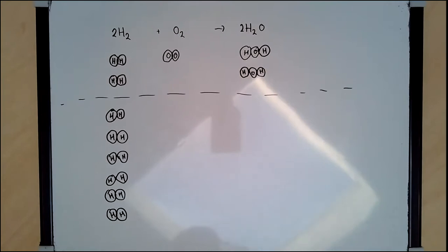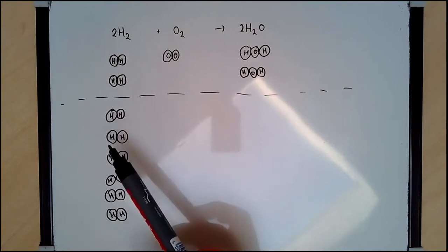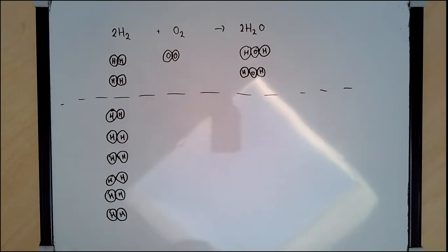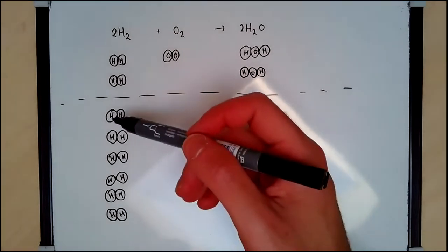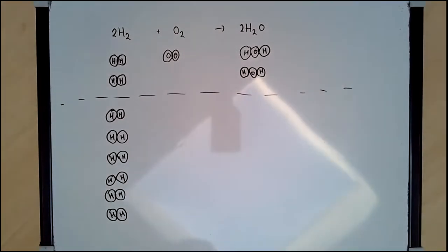And we saw that we therefore put a two over there and a two over there. Now, what that means is that two molecules of hydrogen react with one molecule of oxygen. So let's say, instead of having just two molecules of hydrogen, I had six.